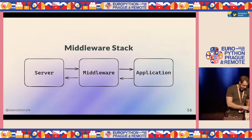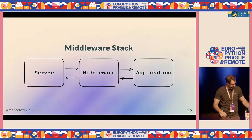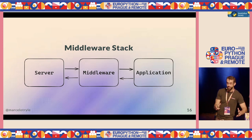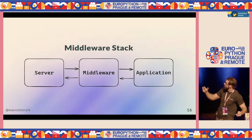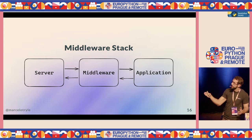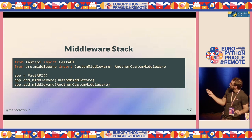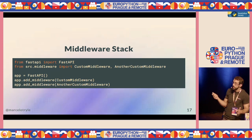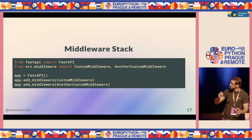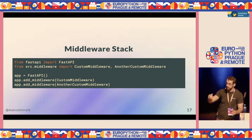You have the middleware stack. You have the server, and you have several middlewares, and then you have the application — so it runs server, middleware, and application. If you have multiple middlewares, they are stacked in the middle. For example, on this code you have two middlewares: a custom middleware and another custom middleware. What's going to happen is the server sends to the application, but it passes through those middlewares first.